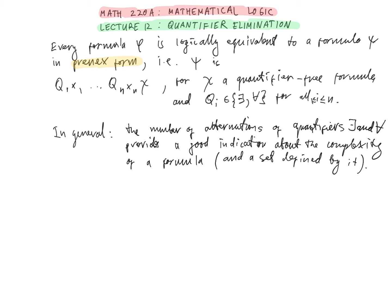For example, most statements in mathematical practice only involve a couple of alternations of quantifiers. In certain particular structures such as the arithmetic of the natural numbers with the operations of addition and multiplication, one exhibits what may be called Gödelian phenomena, where the more alternations we allow in a formula the more complicated the sets defined by it become — in particular they become undecidable and even of higher Turing degrees.